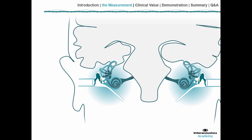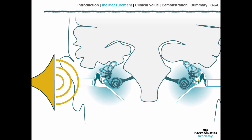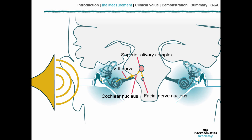The acoustic reflex is about what happens if we present a very loud sound to the ear. In a normal situation, the cochlea will pick up and send activity to the cochlear nucleus. The cochlear nucleus passes on the information to the superior olivary complex, and from there information travels to the brain. At the same time, it branches off to the facial nerve nucleus, and a signal is sent through the seventh nerve towards the stapedius muscle, which will then contract. By this contraction, the positioning of the ossicular chain becomes different, and thereby the transfer of sounds through the middle ear becomes different.